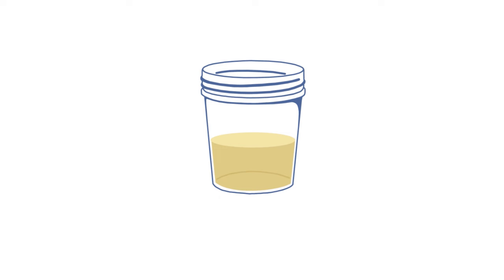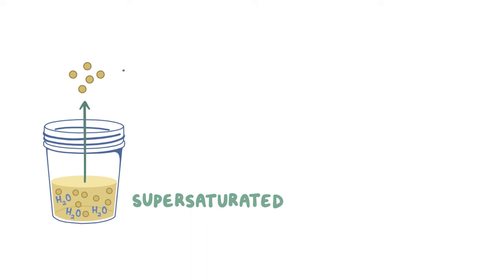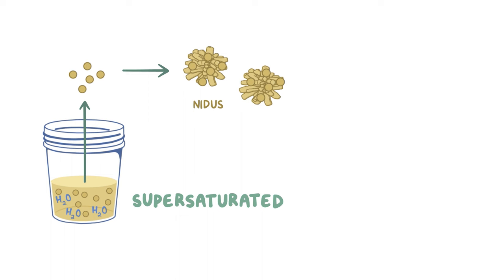Urine is a combination of water, which acts as a solvent, and all sorts of particles or solutes. In general, when certain solutes become too concentrated in the solvent they become supersaturated. Urinary supersaturation of certain solutes results in precipitation out of the solution and formation of crystals. Those crystals act as a nidus, or place where more solutes can deposit, and over time they can build up a crystalline structure.